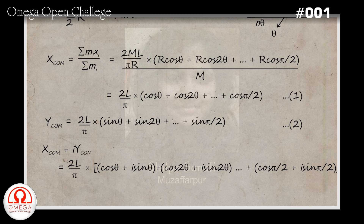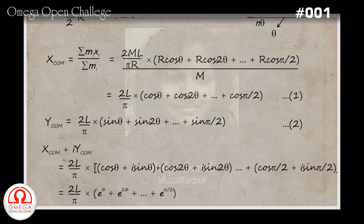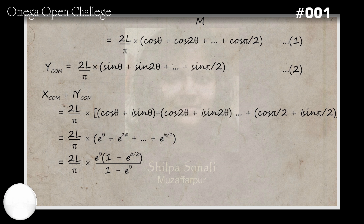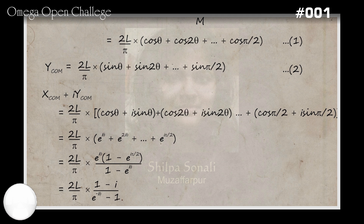Multiplying the second equation by i and adding, we get x plus iy equals 2l by pi into [cos theta + i sin theta + cos 2theta + i sin 2theta + ... + cos(pi by 2) + i sin(pi by 2)]. Since cos theta + i sin theta can be written as e to the power i theta, the position of the center of mass in the Argand plane is 2l by pi into [e^(i theta) + e^(2i theta) + ... + e^(i pi by 2)]. Taking the sum of this geometric progression, we get 2l by pi into e^(i theta) times (1 minus e^(i pi by 2)) divided by (1 minus e^(i theta)). Putting e^(i pi by 2) equal to i and dividing numerator and denominator by e^(i theta), we get 2l by pi into (1 minus i) divided by (e^(minus i theta) minus 1).